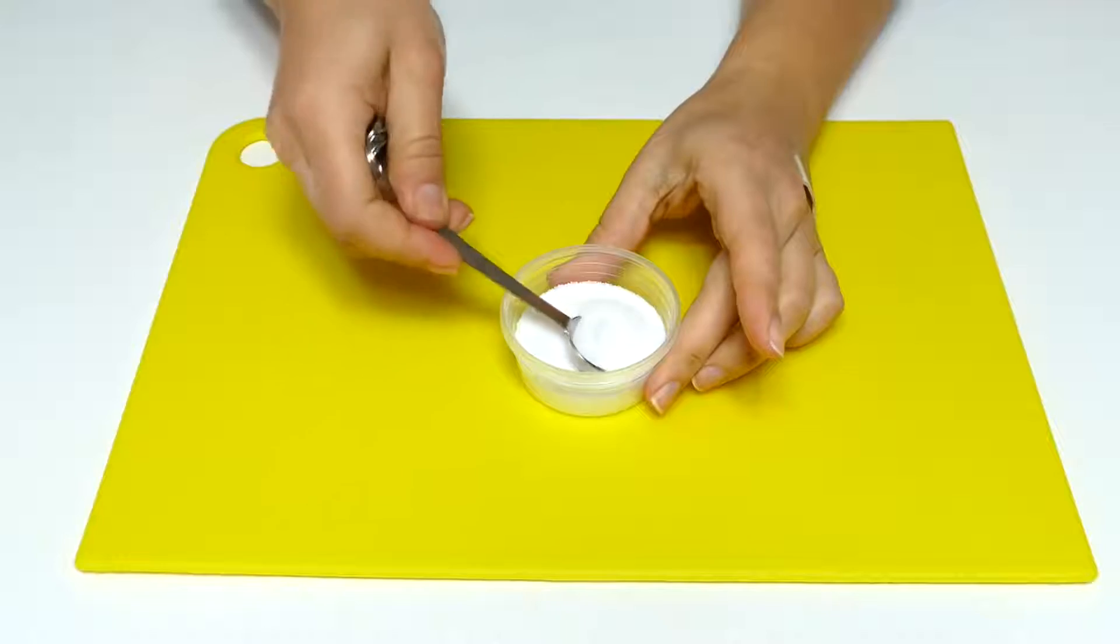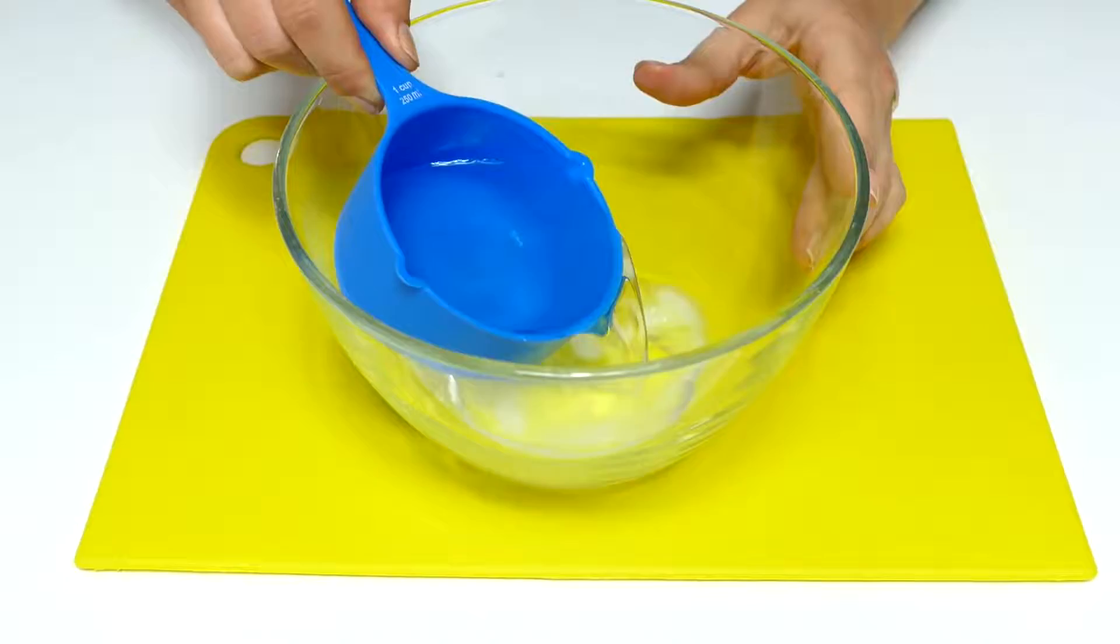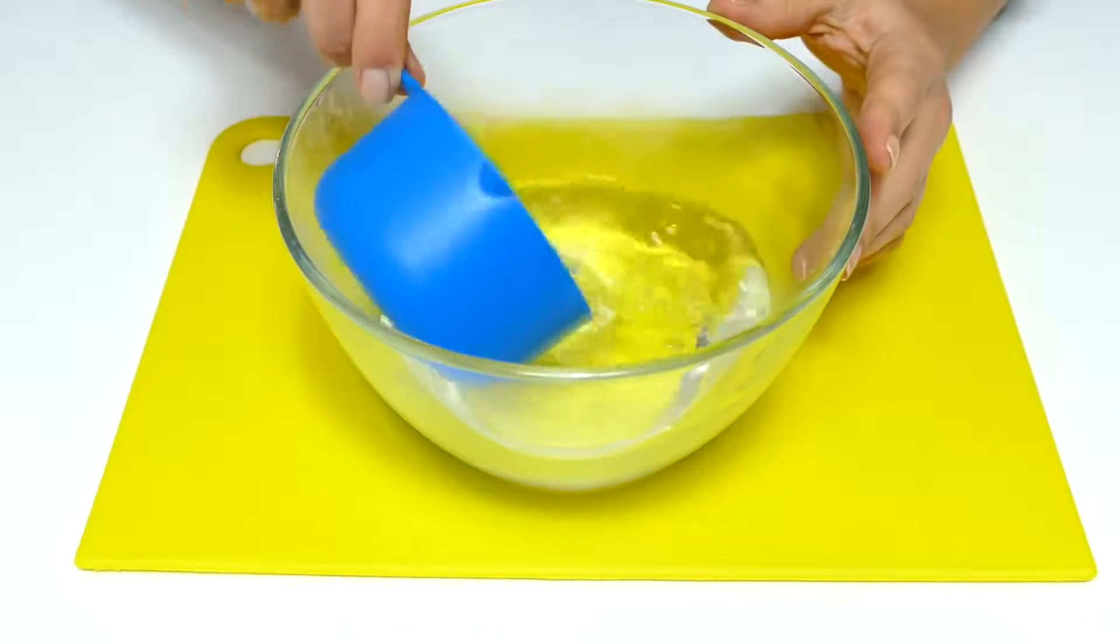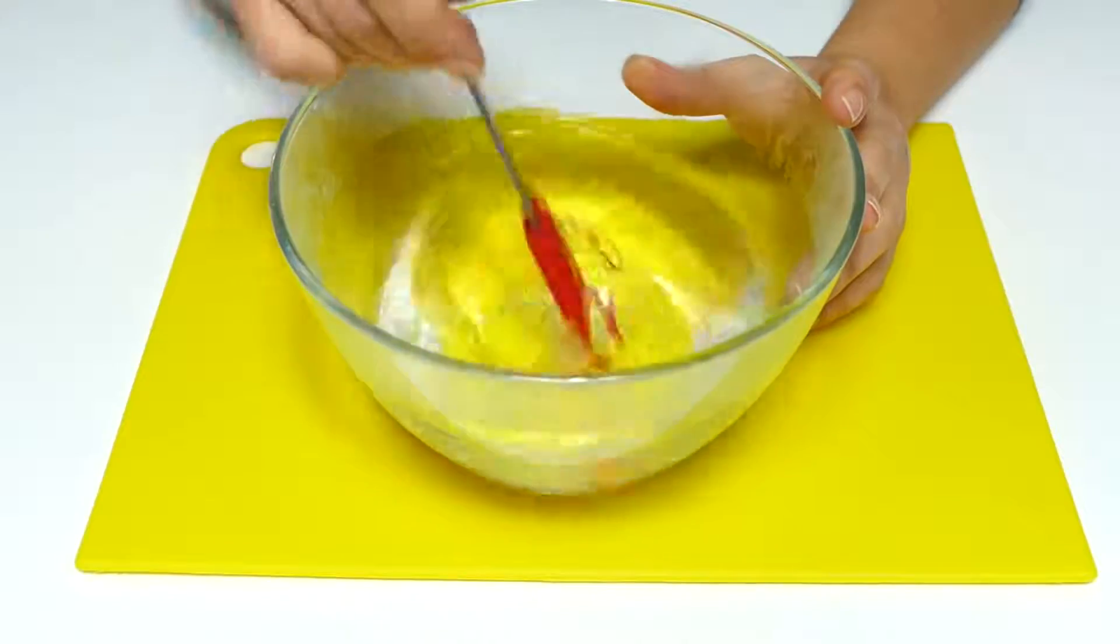Now we'll make a solution with borax. For that we'll pour out one small spoon of borax then add 500 milliliters of hot water, stir up to complete the solution and wait until it cools down.